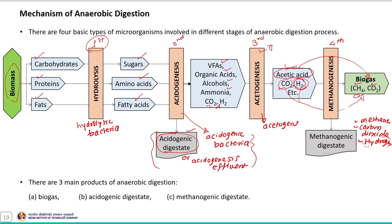The methanogenic digestate is rich in nutrients and can be an excellent bio-fertilizer, depending on the quality of the material being digested. The digested slurry needs certain pre-processing to remove toxic contaminants before being used for sustainable agriculture. The three main products of the anaerobic digestion process are biogas, acidogenic digestate, and methanogenic digestate.